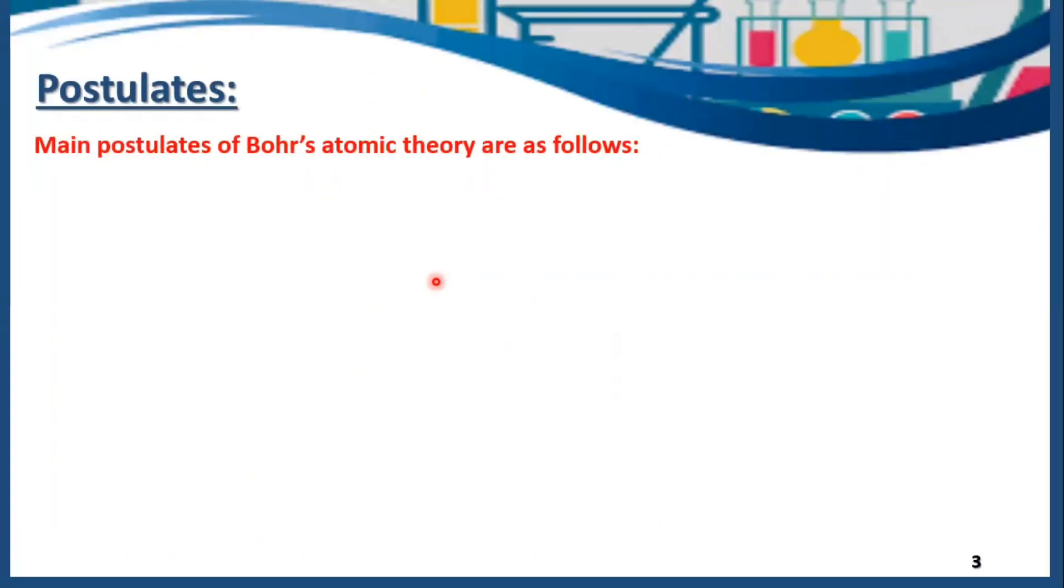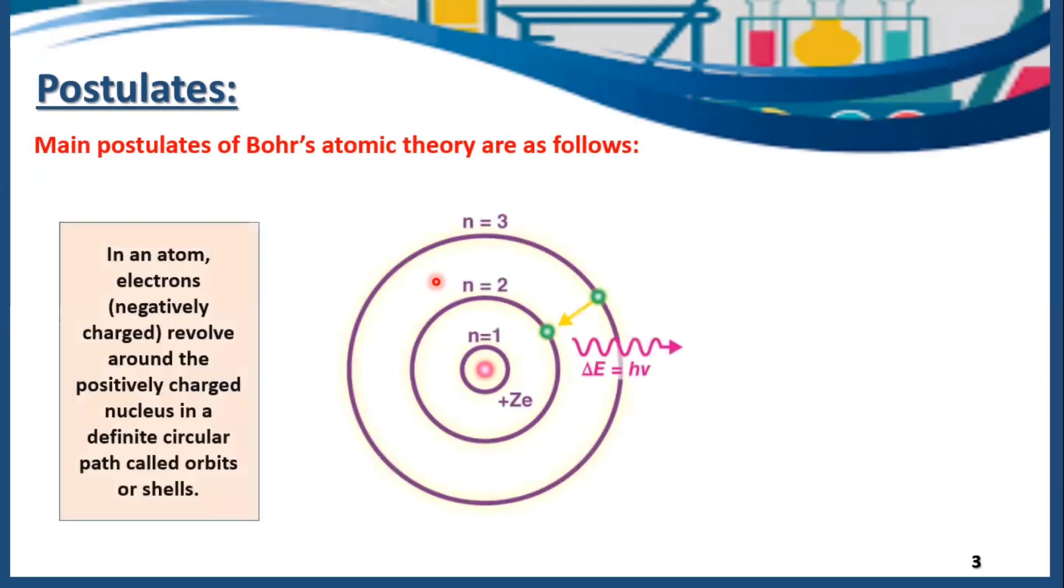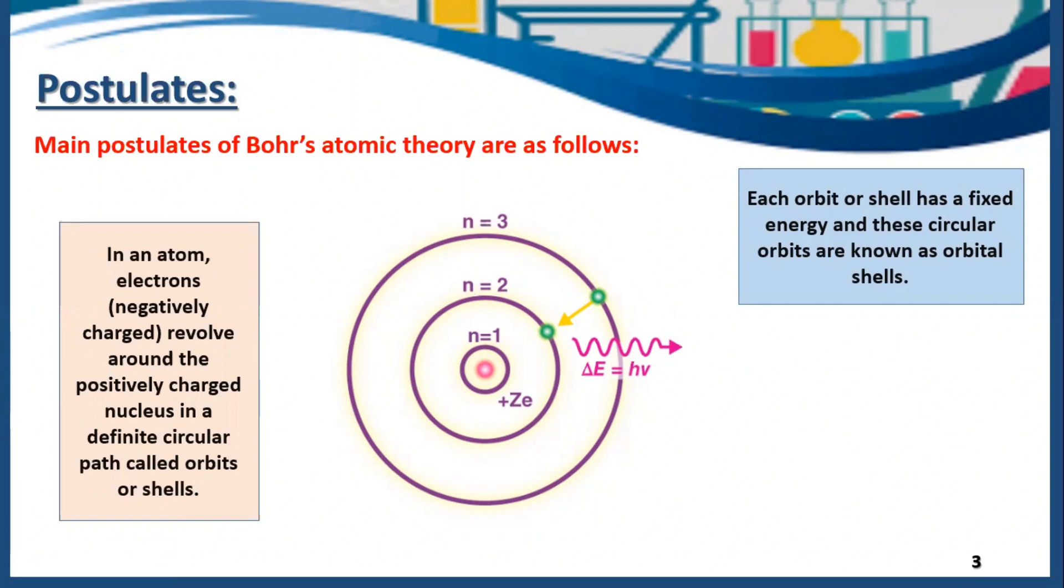Here we have some postulates of Bohr's atomic model. In an atom, electrons revolve around the nucleus. The electron have a negative charge and the nucleus have a positive charge, and the electrons are revolving around the nucleus in definite circular paths. Each orbit or shell has a fixed energy, and these circular orbits are known as orbital or shells.